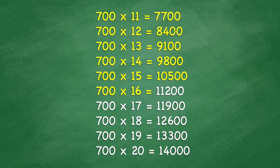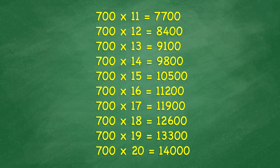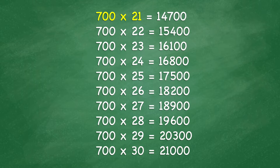700 times 16 equals 11,200. 700 times 17 equals 11,900. 700 times 18 equals 12,600. 700 times 19 equals 13,300. 700 times 20 equals 14,000. 700 times 21 equals 14,700. 700 times 22 equals 15,400. 700 times 23 equals 16,100.